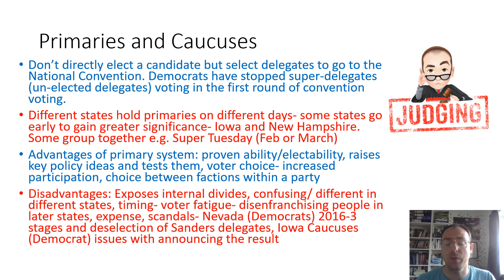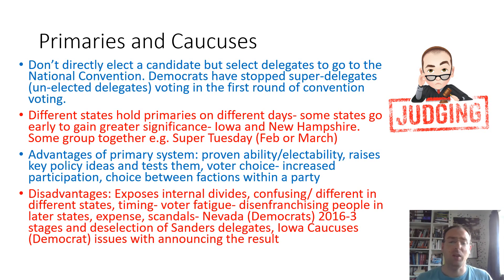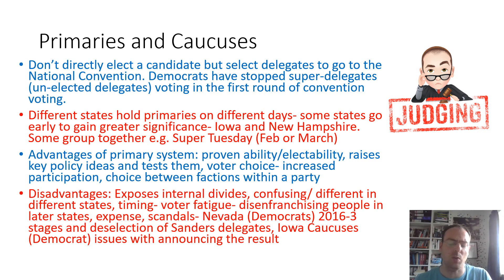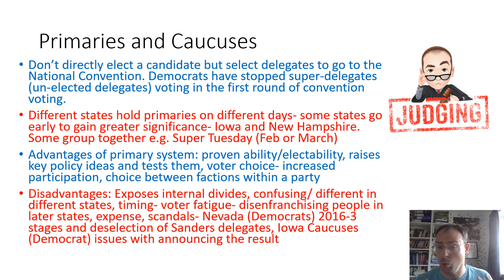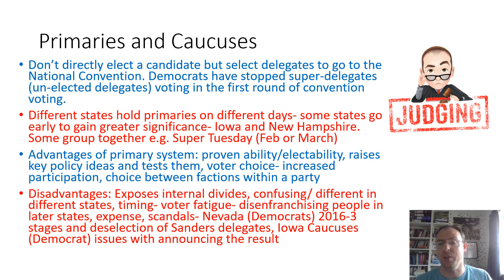You almost disenfranchise people whose primaries are later in the process if a clear leader emerges by that point. And they are very, very expensive to run, covering all the distance over the states. You do get scandals — for example, in Nevada for the Democrats in 2016, where they have three stages to the selection process: Clinton won the first stage, but her delegates didn't turn up for the second stage, which meant Sanders won the second stage. Then they changed the rules partway through when Sanders's delegates were deselected, and it was all very messy. And the Iowa caucus in 2020 saw real issues with announcing the result through an app they were using — so they're not free from controversy.